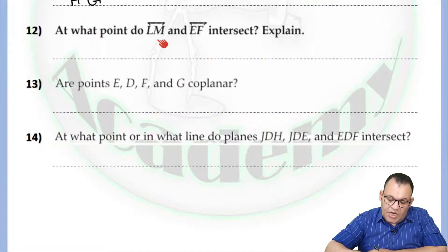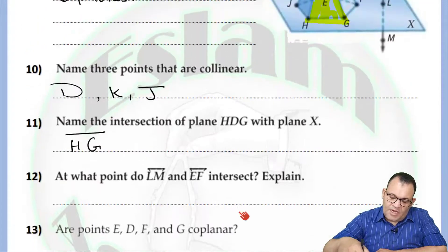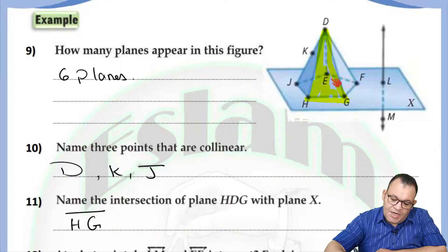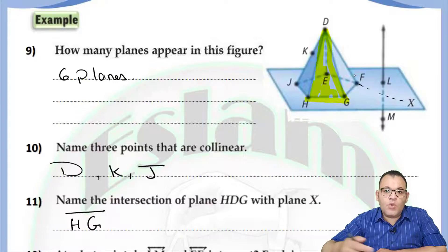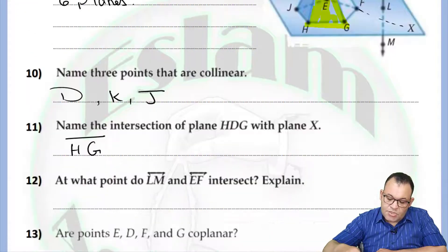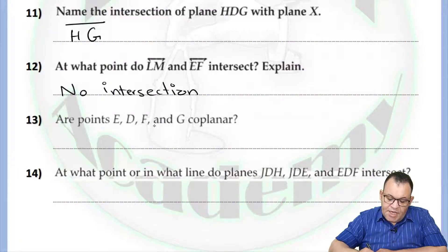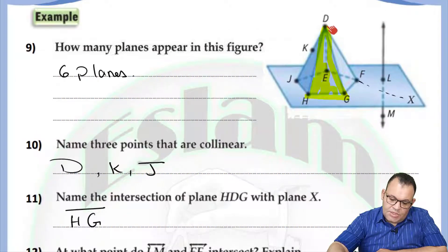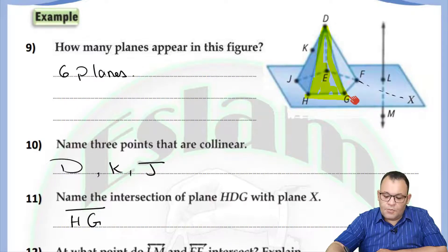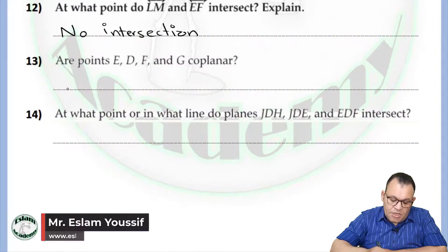At what point do line LM and line EF intersect? We have line LM, and if you extend line EF, you will find that the two lines will never intersect, because line LM — the dotted line — is below the plane, and EF lies on the plane, so they will never intersect. There is no intersection between them. Are points E, D, F, and G coplanar? E, D, and F lie on the same plane, but if you add G, you will find that they are not coplanar. So points E, D, F, and G are not coplanar.